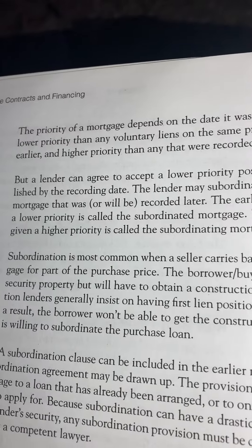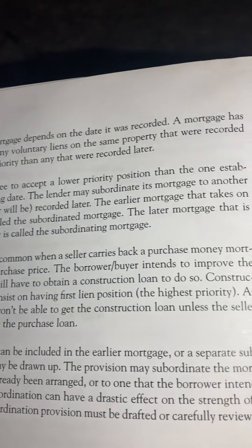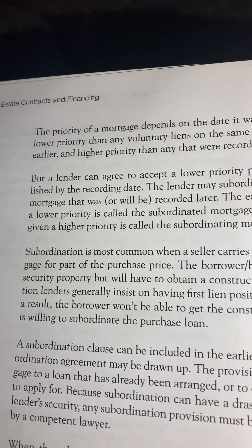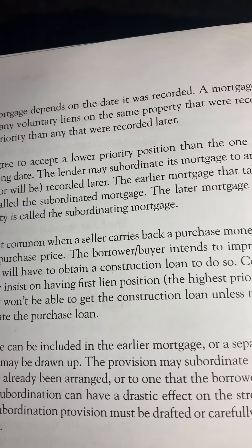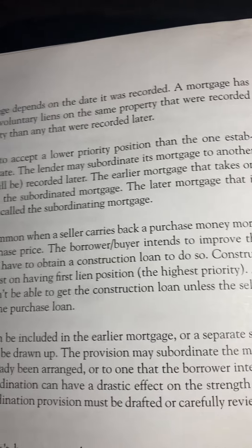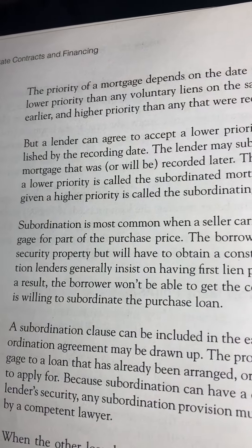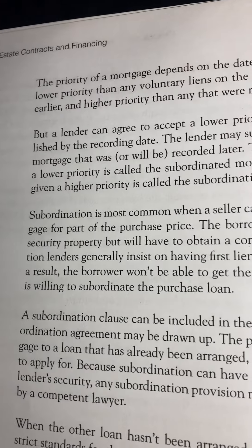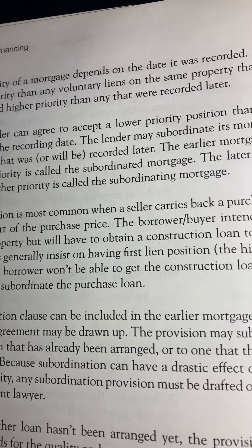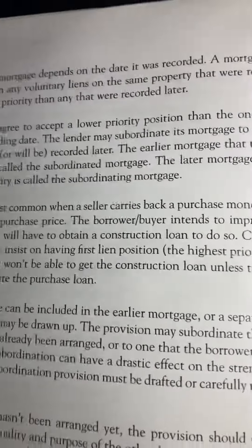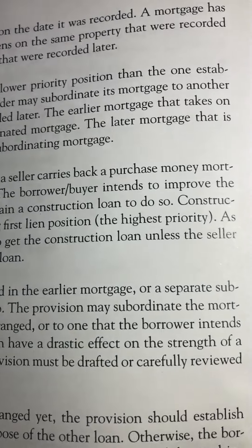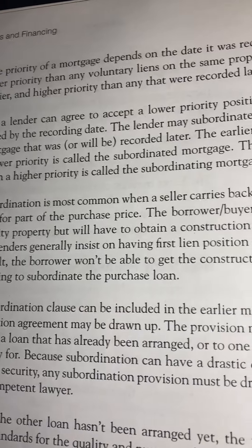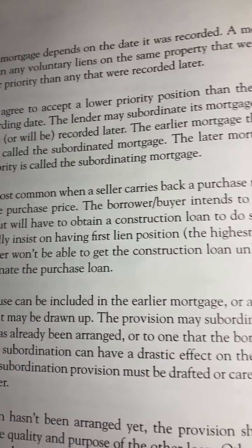But a lender can agree to accept a lower priority position than the one established by the recording date. The lender may subordinate its mortgage to another mortgage that was or will be recorded later. The earlier mortgage that takes on a lower priority is called the subordinated mortgage. The later mortgage that is given a higher priority is called the subordinating mortgage.